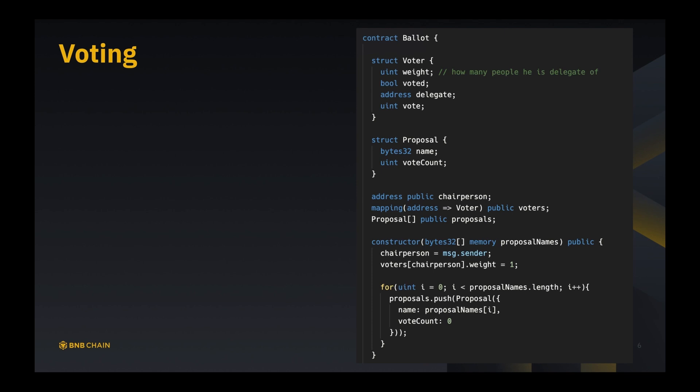As he gets picked by more people as delegate, his weight will get increased. Then voted just means whether this voter has made his vote or not. Delegate means who is going to vote for him, who is his delegate. And vote is the ID of the proposal that this person has voted for.